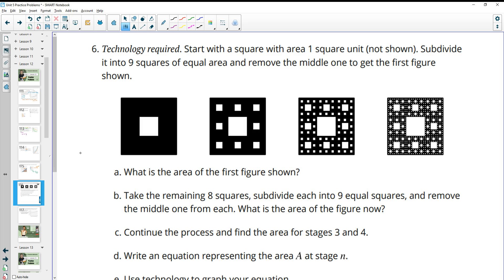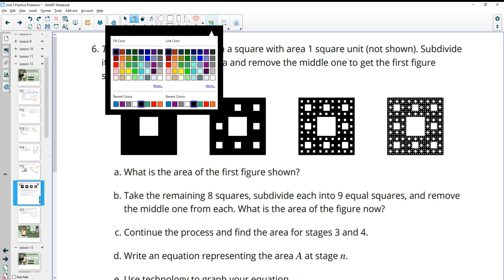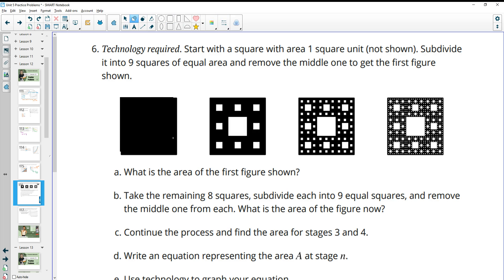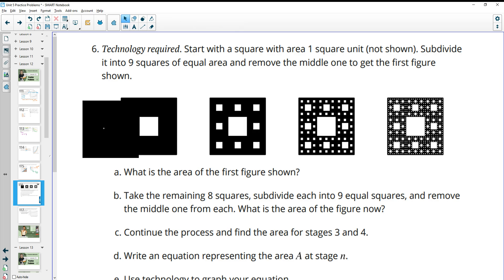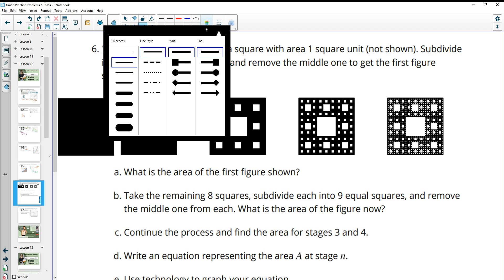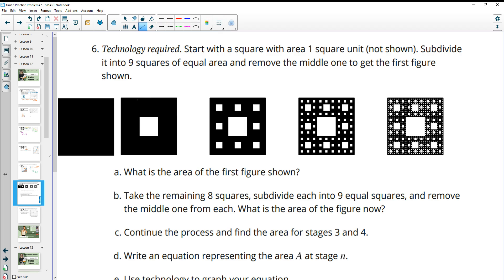Number 6 asks us to start with a square with an area of 1 square, which is not shown. So we don't have that one shown, so we could just draw it. So we started with this square. Then it says subdivide that square into 9 squares. So if we look at this, let me get us some lines on here to show where these 9 squares are coming from. We've got these 9 squares here, so we're just subdividing it into 9 squares.